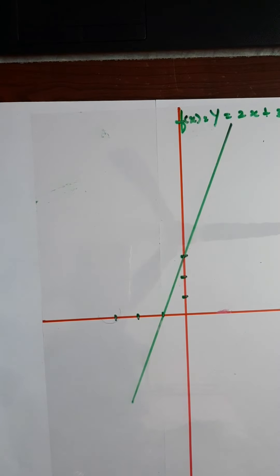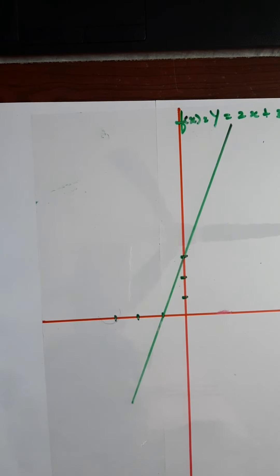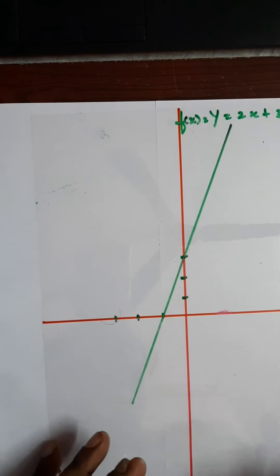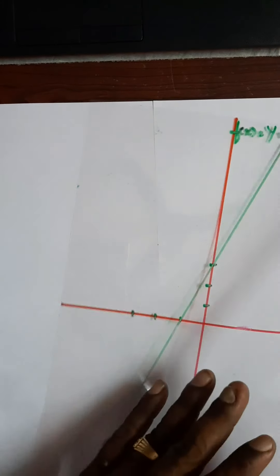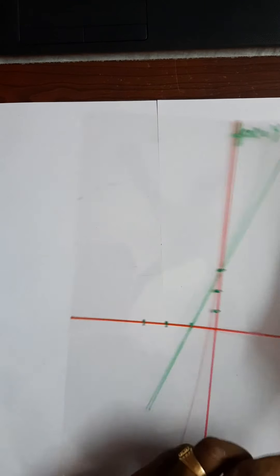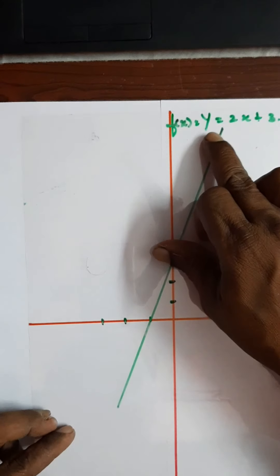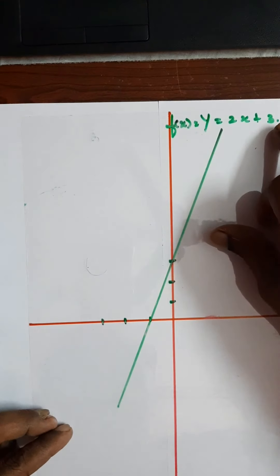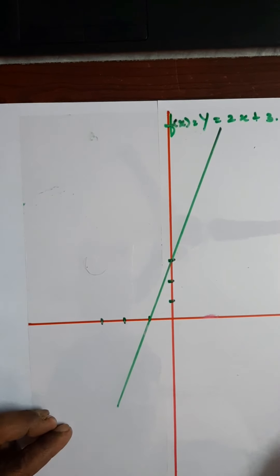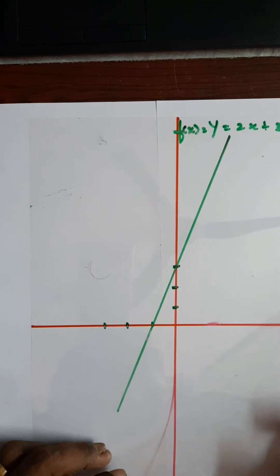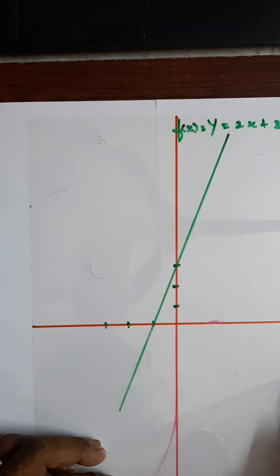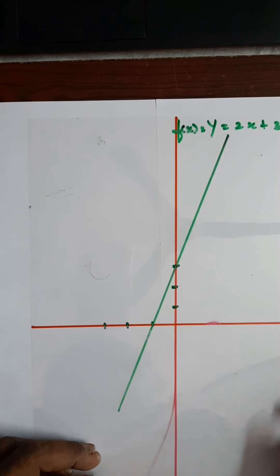f(x) = y = 2x + 3. I will find the inverse function. F inverse of x: y = (x - 3) / 2. This is how to graph y = 2x + 3 and find its inverse. Without drawing a new graph, without taking any data or calculations, we can easily find the inverse graph.